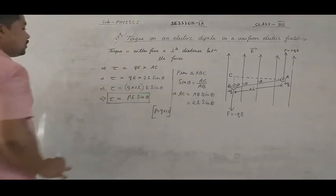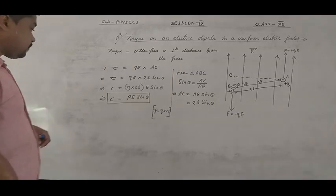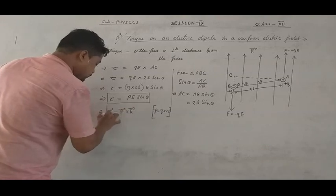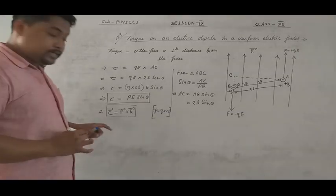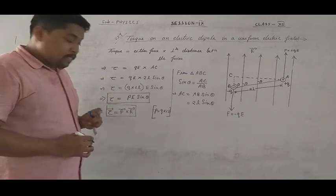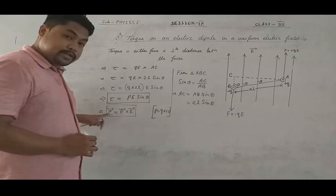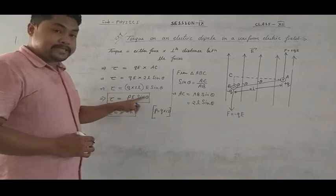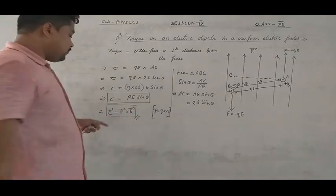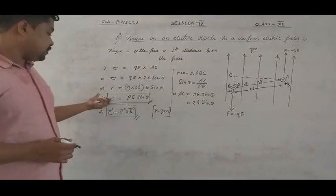So this is the expression of torque on an electric dipole when placed in a uniform electric field. In vector form, tau-vector is equal to P-vector cross E-vector. The cross product of two vectors is also a vector; therefore torque is also a vector quantity, because electric dipole moment is a vector. The scalar form is tau equals PE sin theta.